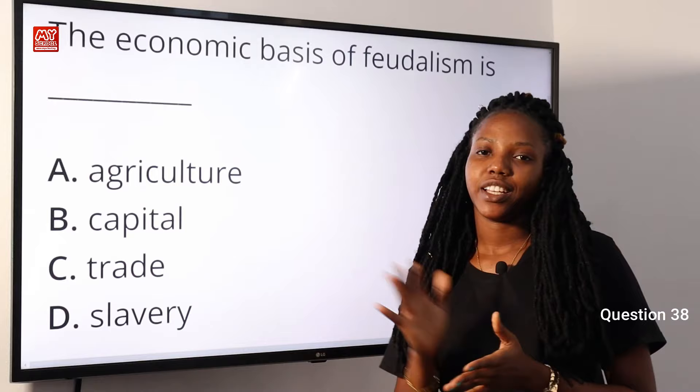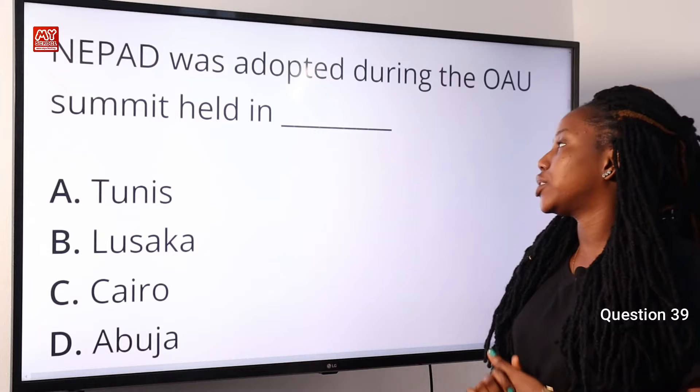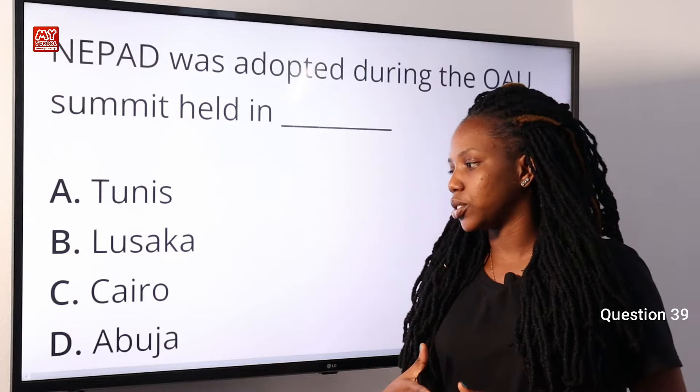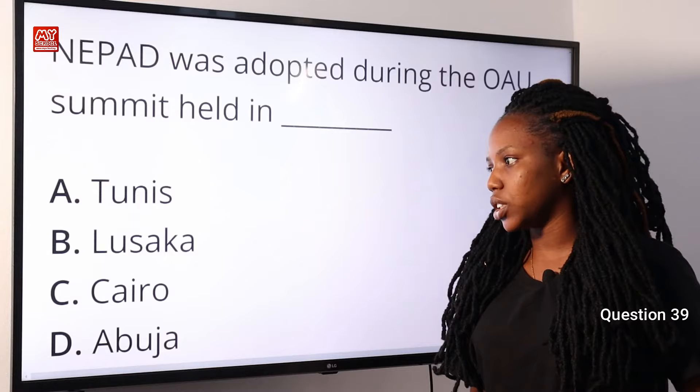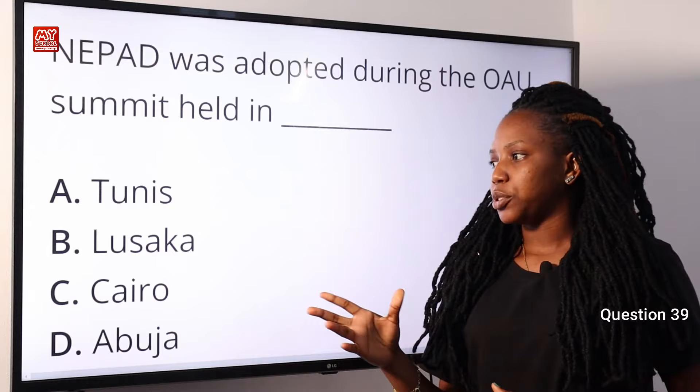Question 39. NEPAD was adopted during the OAU summit held in dash. A, Tunis. B, Lusaka. C, Cairo. D, Abuja. The full meaning of NEPAD is New Partnership for African Development, and OAU stands for Organization of African Unity. This summit was held in Lusaka, Zambia in July 2001. The correct option is B, Lusaka.